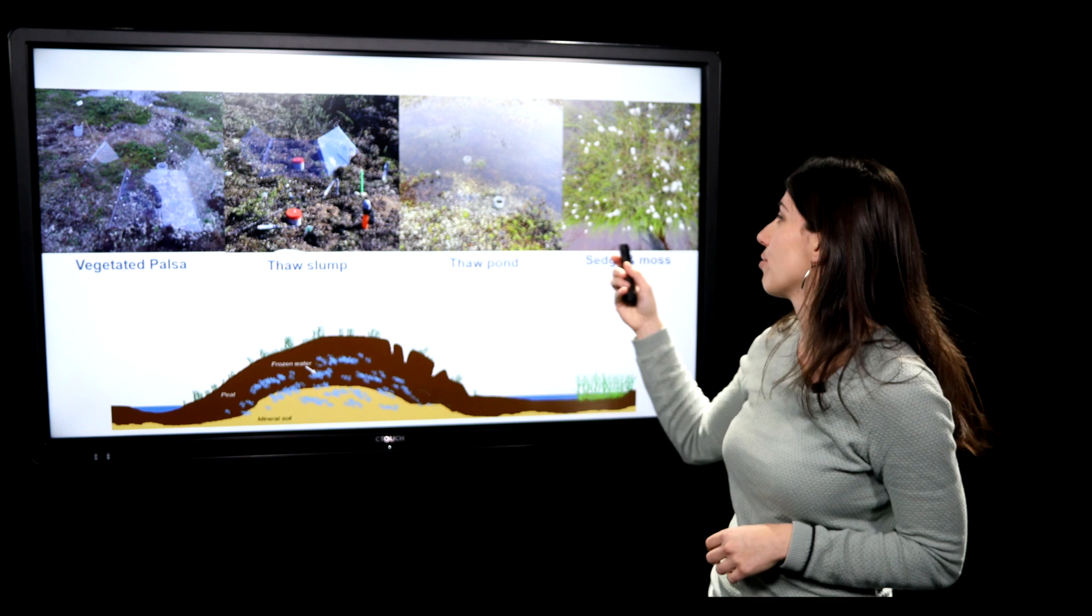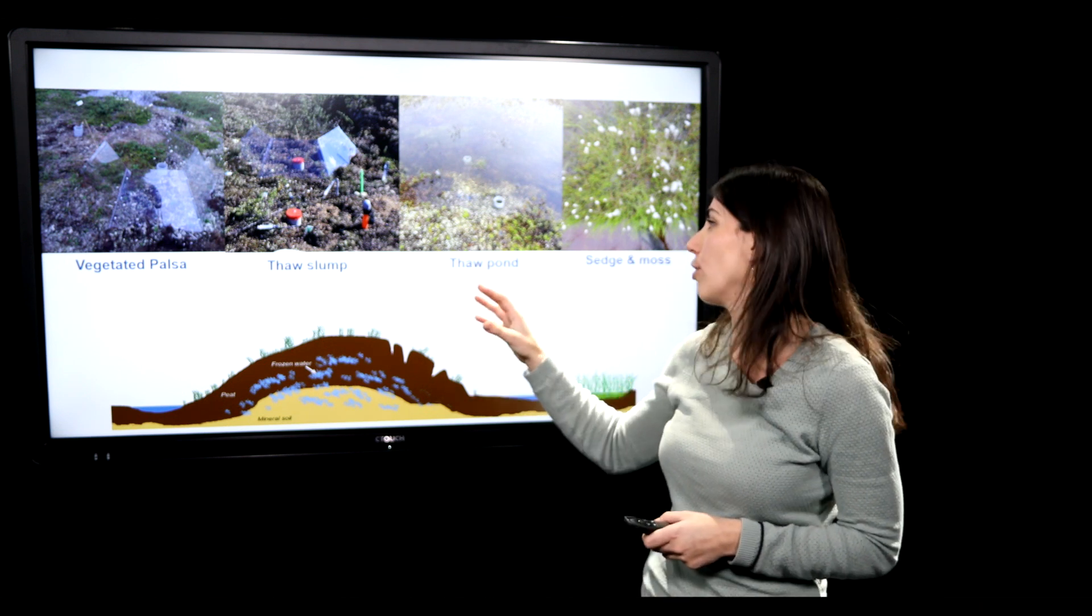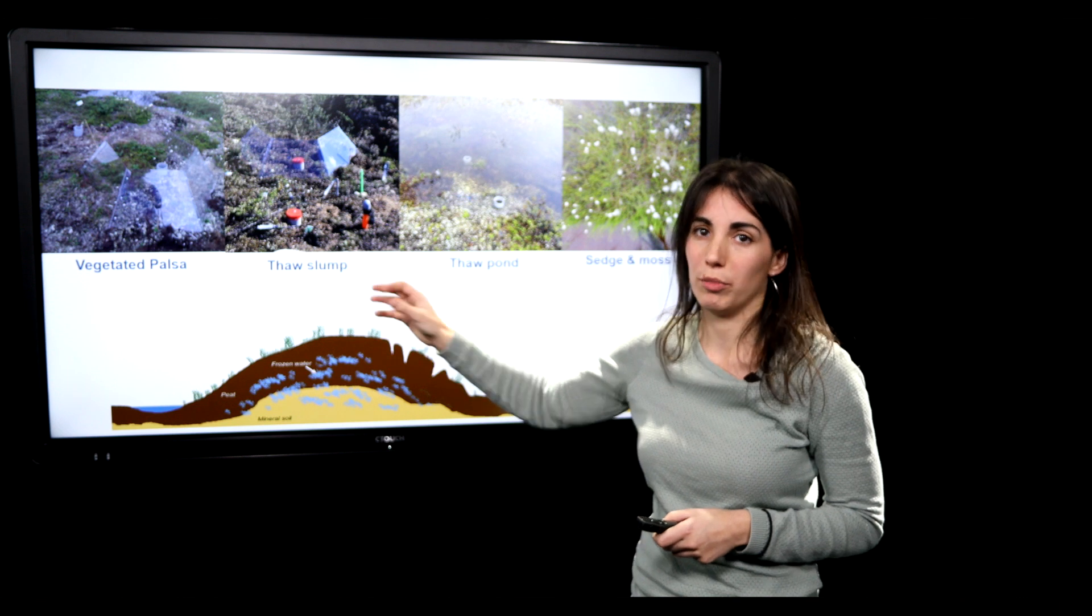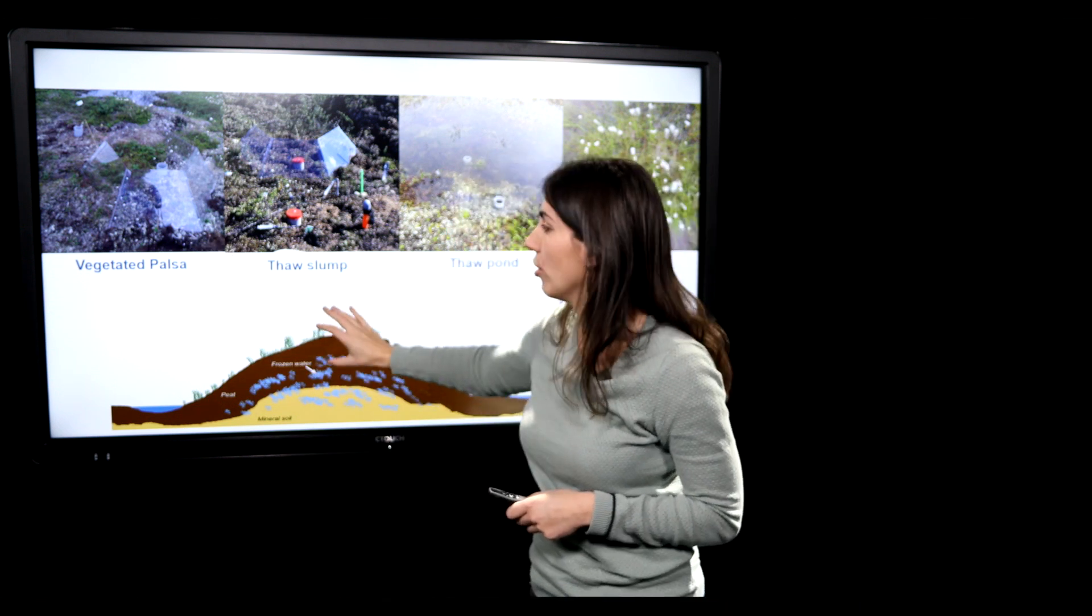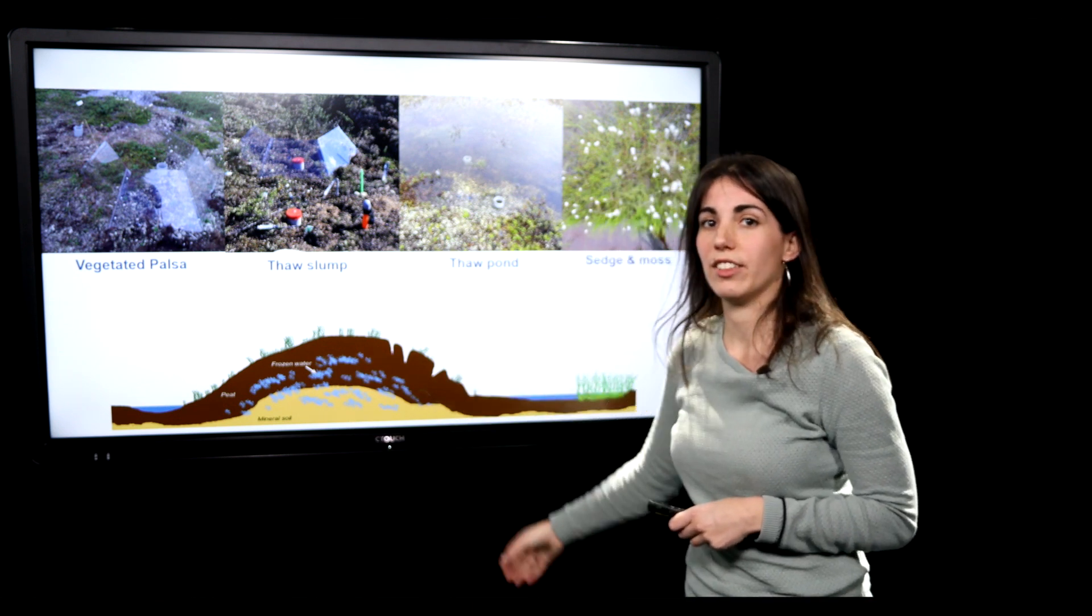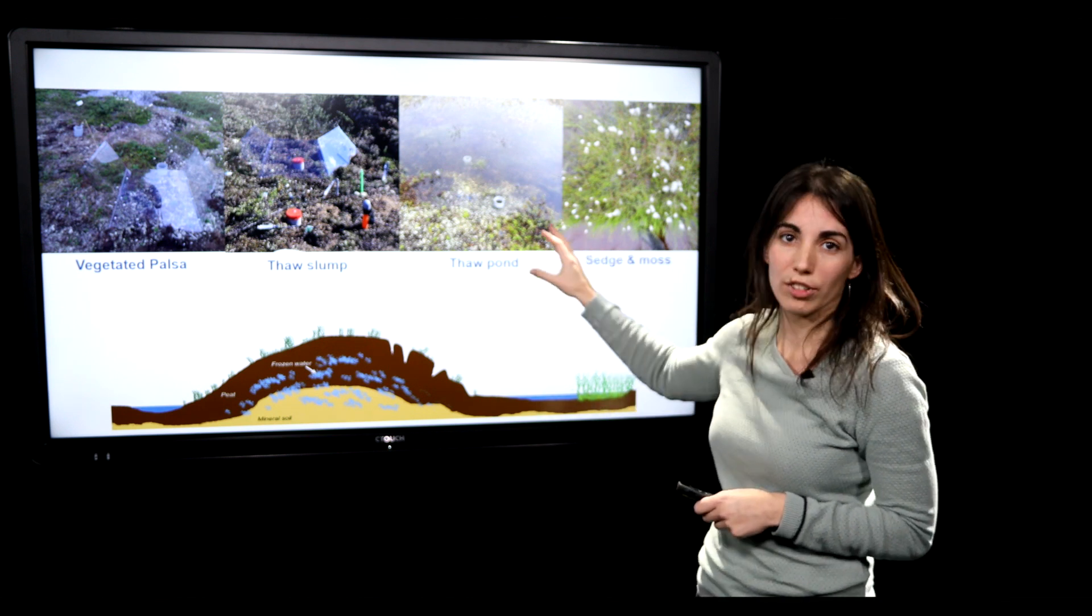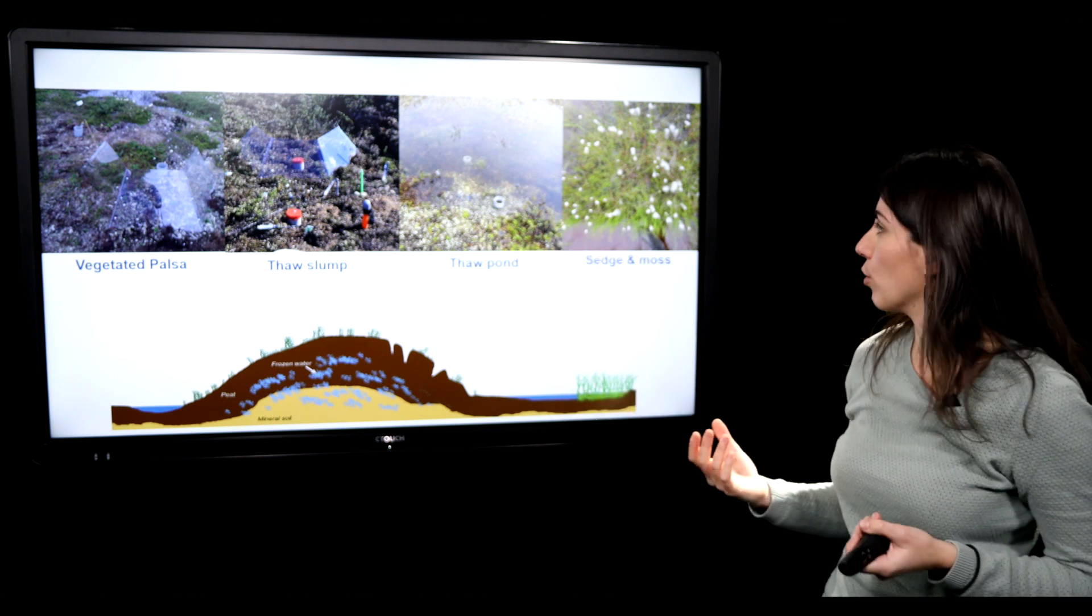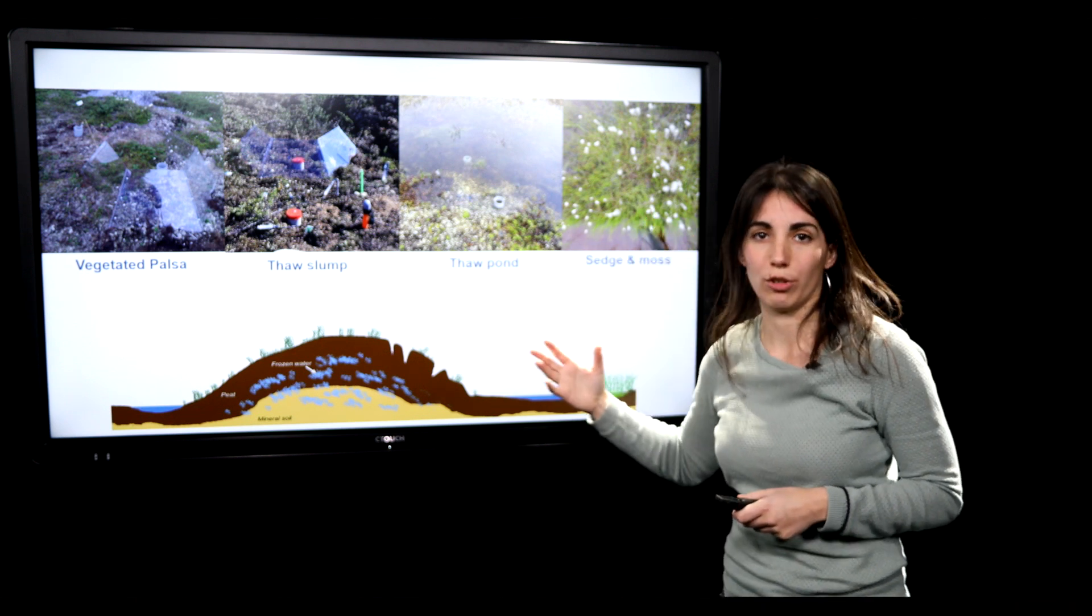So we've taken these different characteristics to measure the different greenhouse gases that are arising from these areas. So we have the vegetated pelsa that is on the intact permafrost, the thaw slumps that are created by the degrading of the permafrost, the thaw ponds that are under water, and then thaw ponds where also vegetation is growing back in.